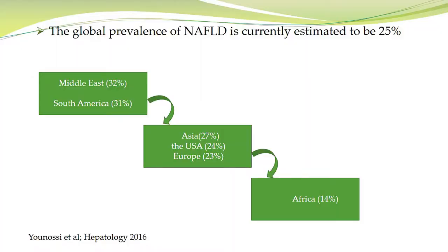The global prevalence of NAFLD is estimated at 25 percent. By region: the Middle East has the highest at 32 percent, followed by South America at 31 percent, Asia at 27 percent, the US at 24 percent, Europe at 23 percent, and Africa at 14 percent, according to a 2016 Hepatology report.